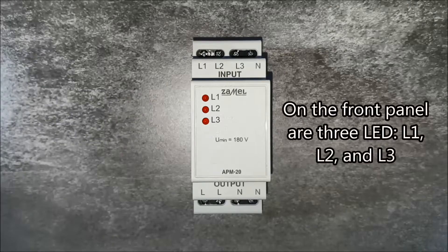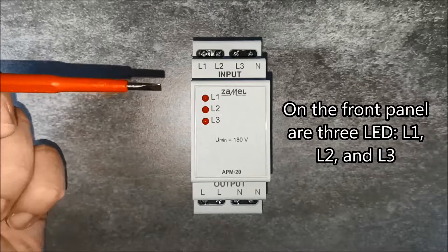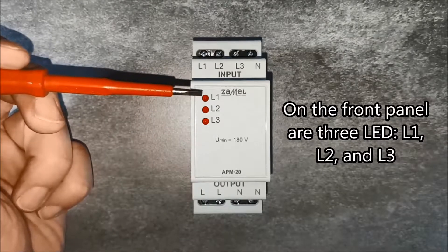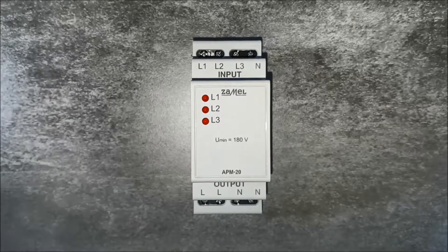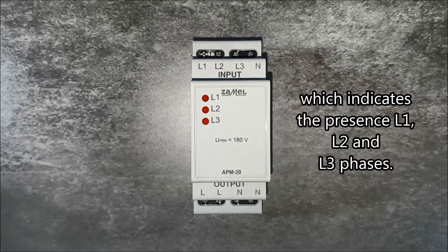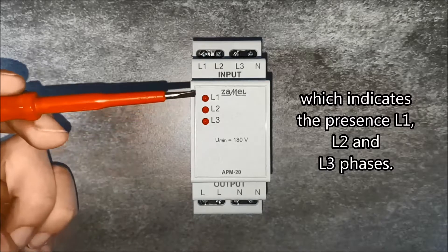On the front panel are 3 LEDs, L1, L2 and L3, which indicate the presence of L1, L2 and L3 phases.